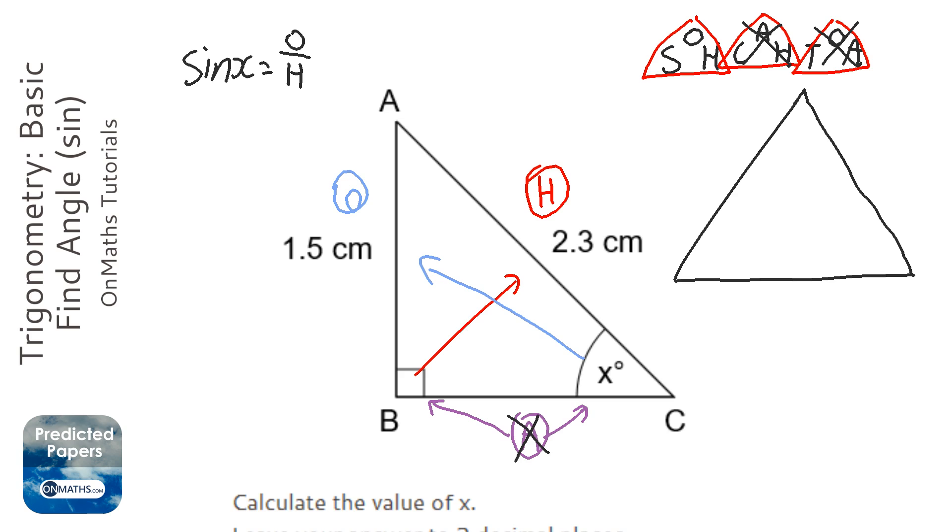So we've got sin x, and the x is the x in here. And S in this stands for sin. And we've got opposite on the top, so 1.5 at the top. And the hypotenuse at the bottom, so 2.3.